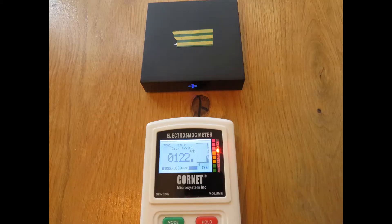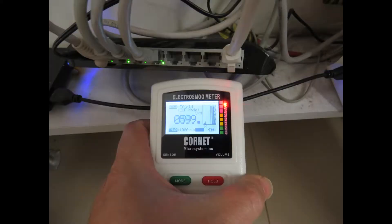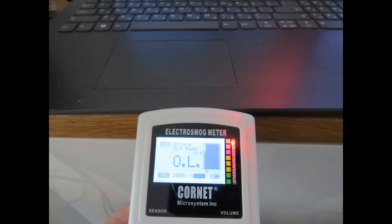The lack of grounding causes the emission of high levels of electric fields from the devices. As you can see and measure with a cornet ED88T Plus. In order to reduce the emission of the electric field, we will ground those devices.